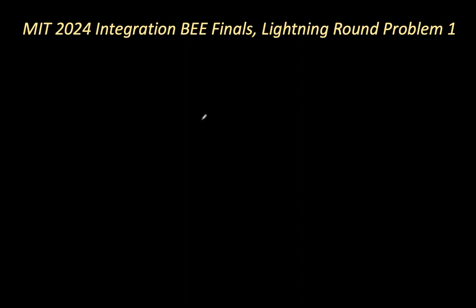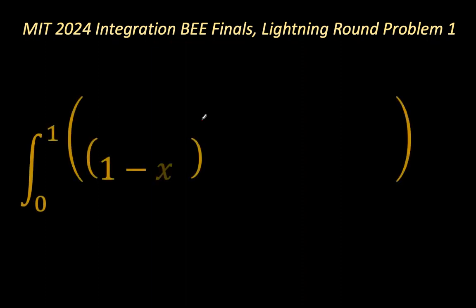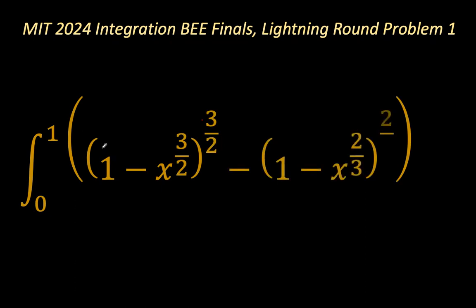Our problem today is the definite integral from x equals 0 to 1 of: open bracket 1 minus x to the power 3 over 2, close bracket to the power 3 over 2, minus open bracket 1 minus x to the power 2 over 3, close bracket to the power 2 over 3.